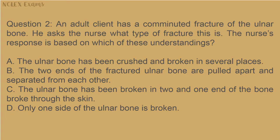Question 2: An adult client has a comminuted fracture of the ulnar bone. He asks the nurse what type of fracture this is. The nurse's response is based on which of these understandings? A) The ulnar bone has been crushed and broken in several places; B) the two ends of the fractured ulnar bone are pulled apart and separated from each other; C) the ulnar bone has been broken in two and one end broke through the skin; D) only one side of the ulnar bone is broken.